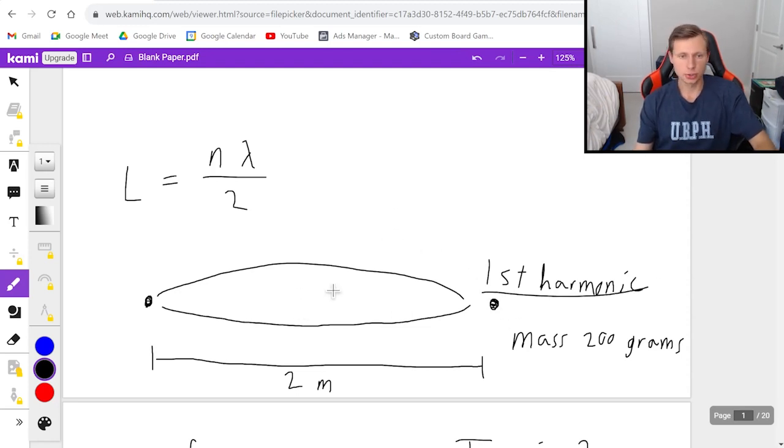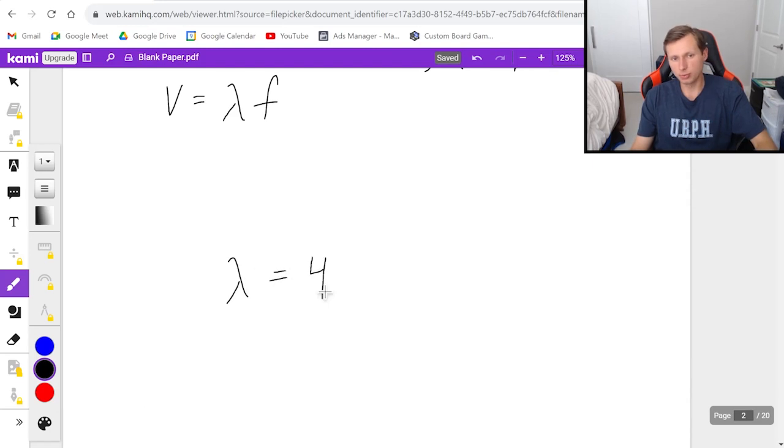And since this is the first harmonic, because there's only one loop here, n is one. So it looks like L, which is two, is equal to one times lambda over two. Multiplying both sides by two, it looks like my wavelength is equal to four.